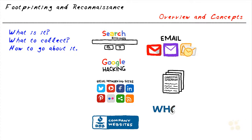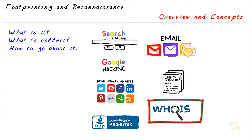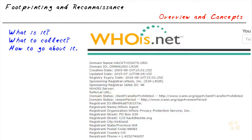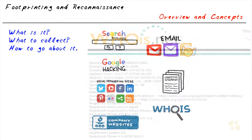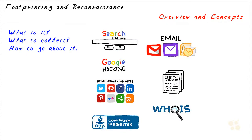Another amazing tool is WHOIS, which gives us domain name details, domain name servers, when the domain was created, and contact details regarding the owner of the domain. That information is useful for several reasons — including knowing the IP address range when we scan the network. And if we're going to do social engineering, having information about who the domain administrator is can be very, very helpful.